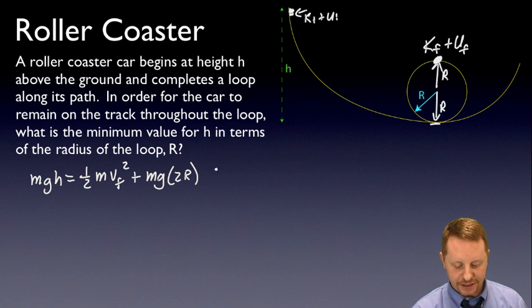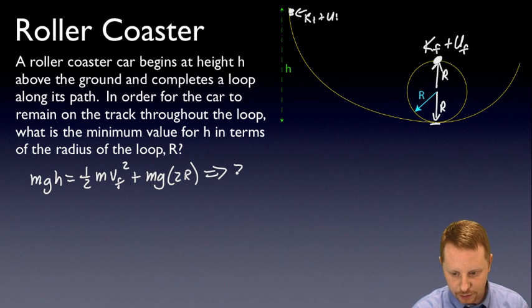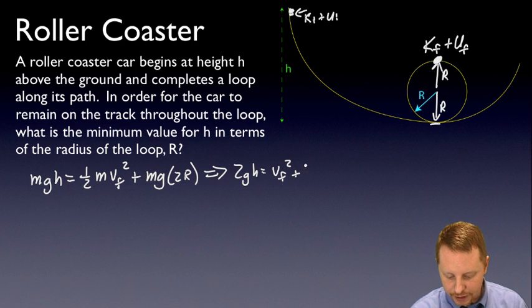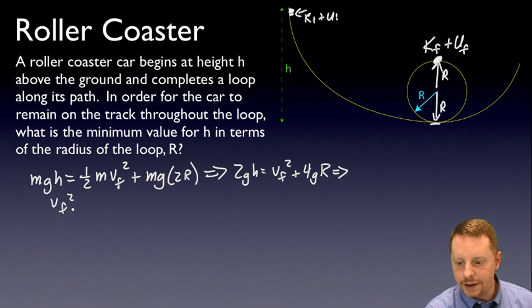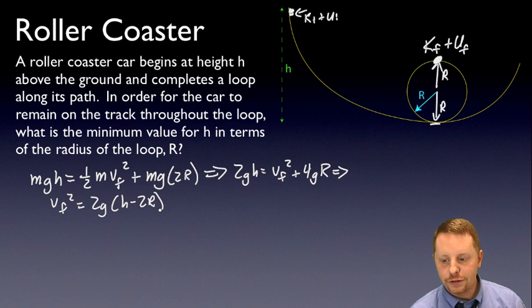Now it becomes an exercise in algebraic manipulation. This implies then, as we look through this, first off, all the m's are going to, we can divide all of these by m. Masses will make a ratio of 1. And if I multiply everything by 2 to get rid of that ½, on the left-hand side, I'm going to get 2gh = vf² + 4gr. Or rearranging for v final squared, vf² = 2g(h - 2r). Good so far?